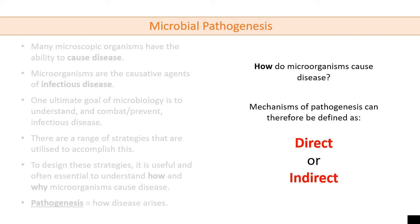If we think about meningitis - meningitis is inflammation of the meninges which surrounds the brain. If you have a microorganism present in the meninges, you will have an immune response, and the immune response causes inflammation. This inflammation is what puts pressure on the brain. We can also think about hepatitis similarly. These concepts you've probably touched on last year, so it's a little bit of a recap, but we can go into them in a lot more detail.